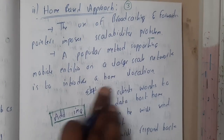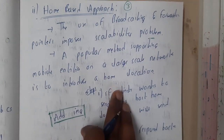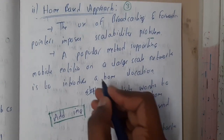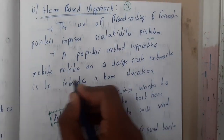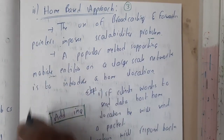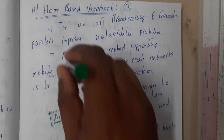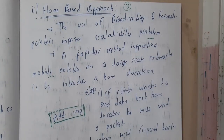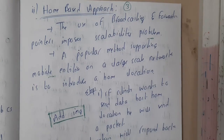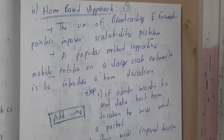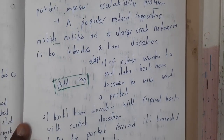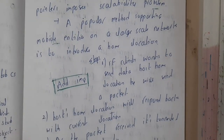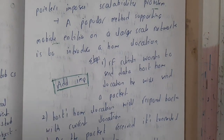Basically, mobile entities refer to devices that have been moved from one spot to another, where identifying the IP address and related information becomes a huge mess. That is the reason why we use the home-based approach.